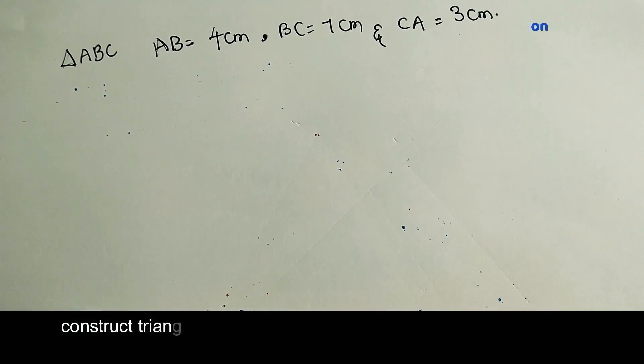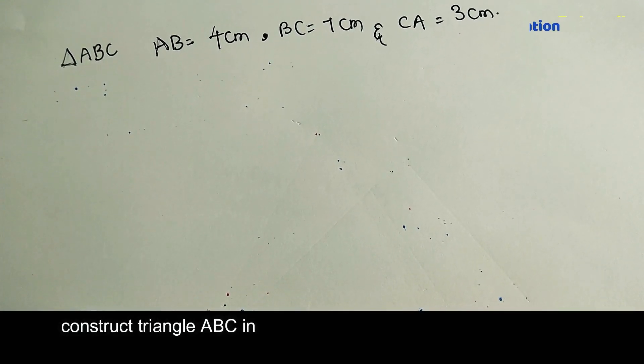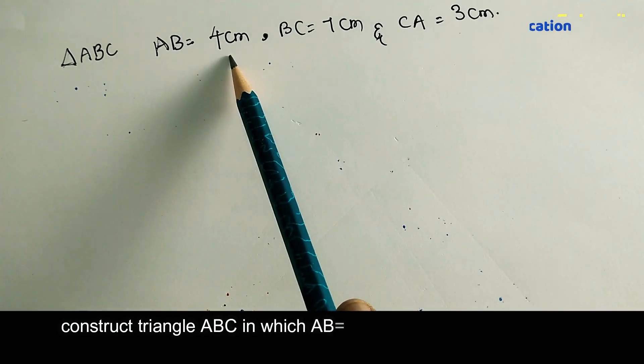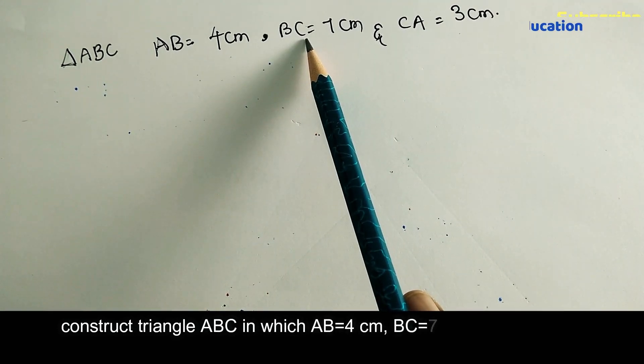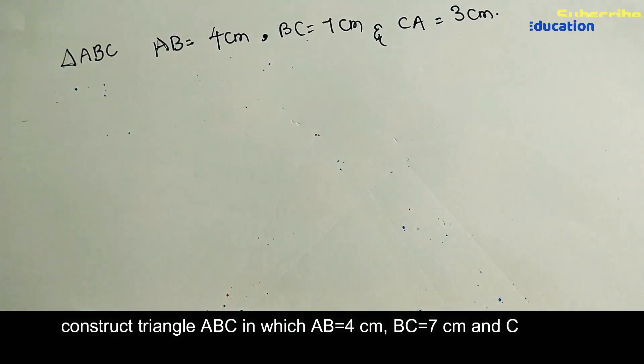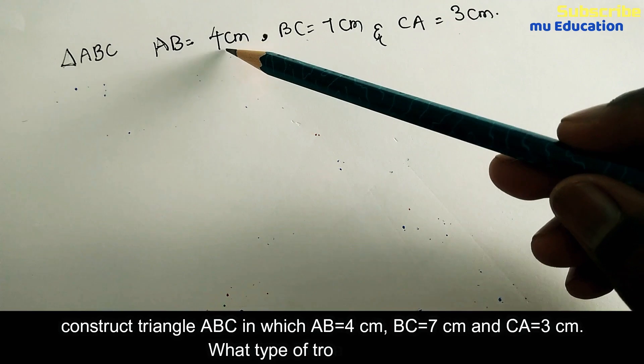In this module, we are going to construct triangle ABC in which AB equals 4 centimeters, BC equals 7 centimeters, and CA equals 3 centimeters. We need to think about which line segment to draw first.